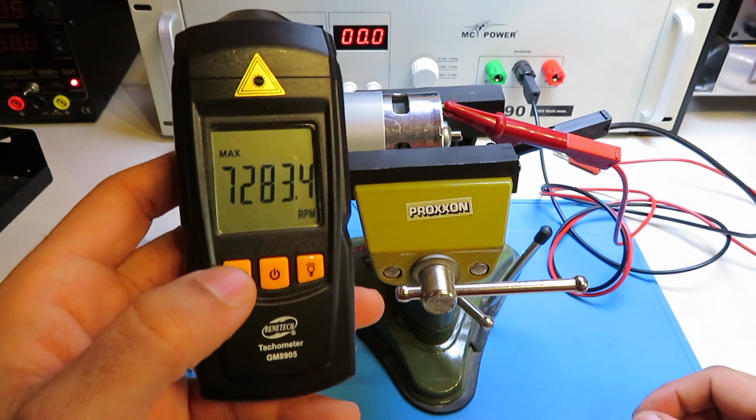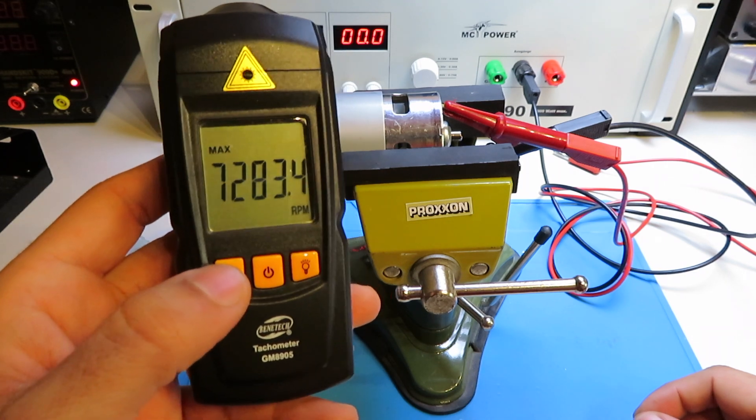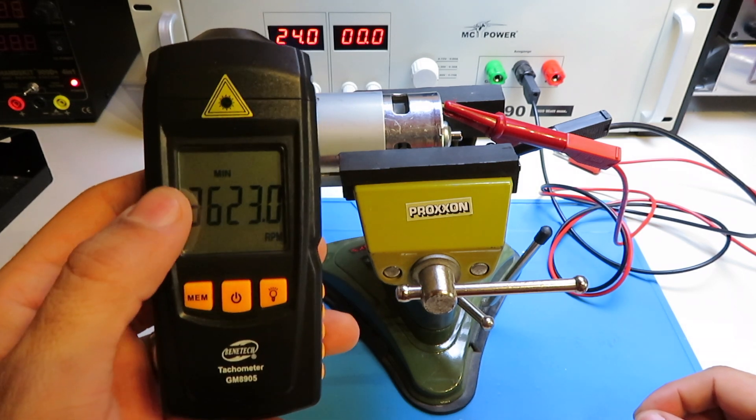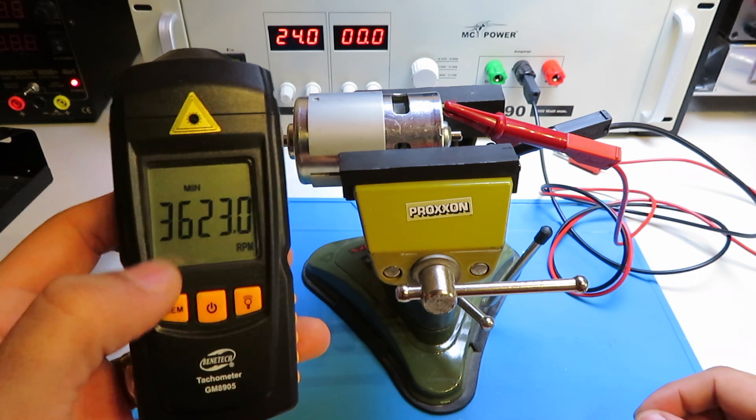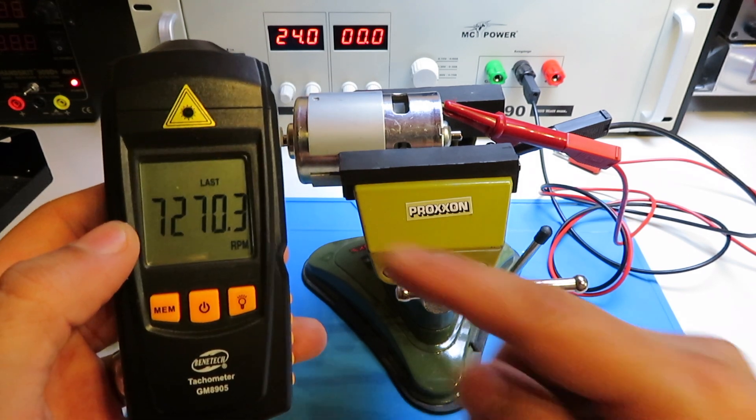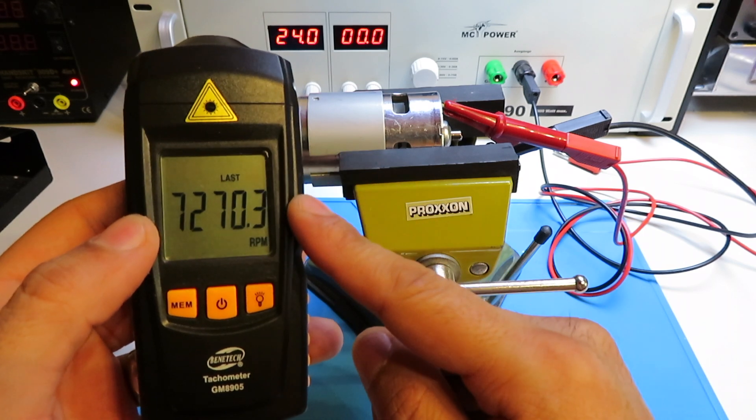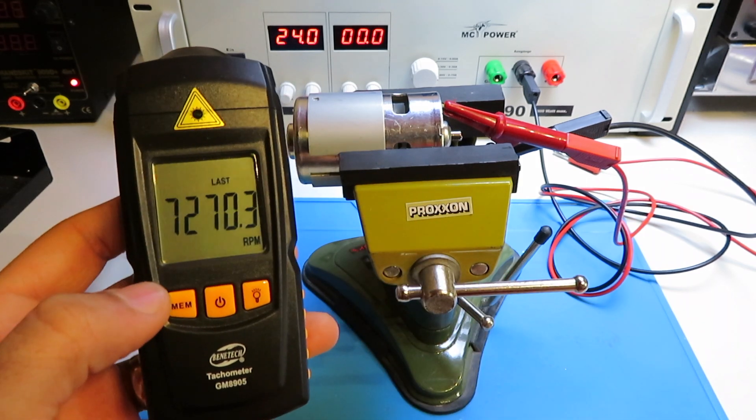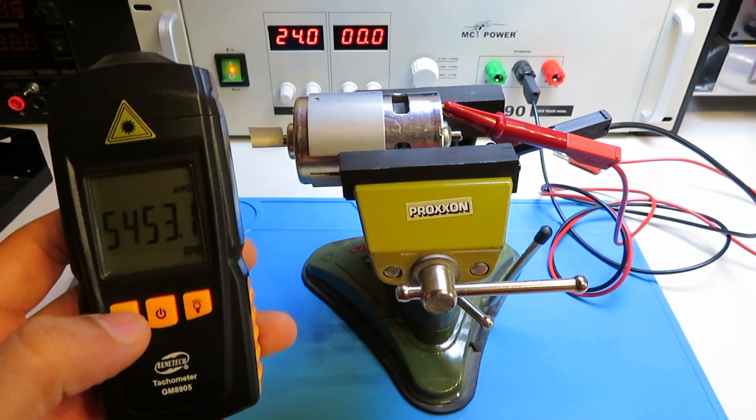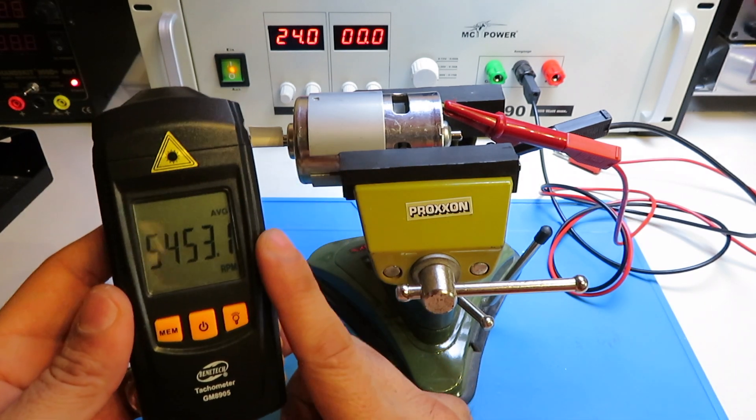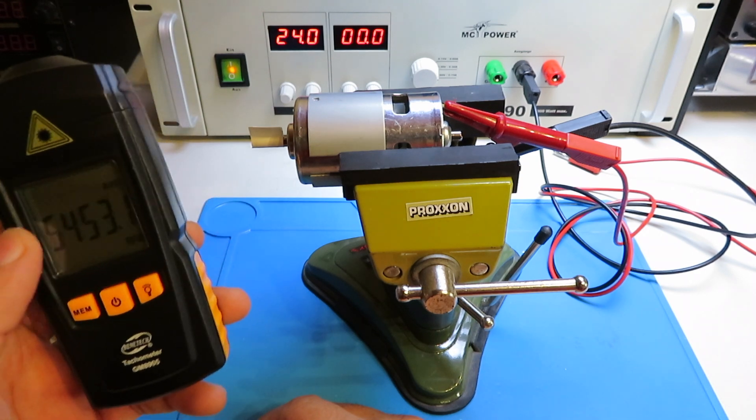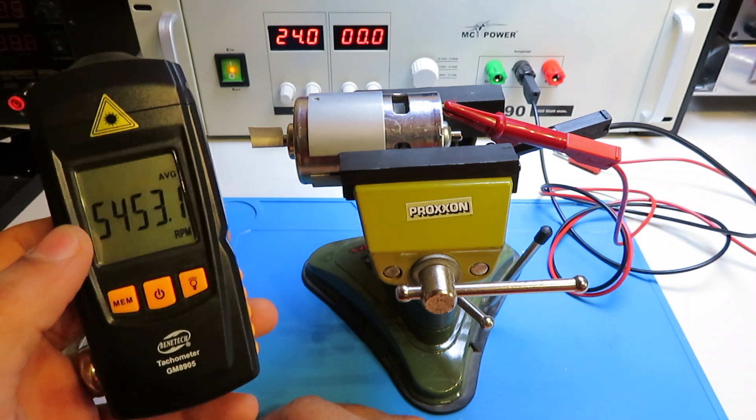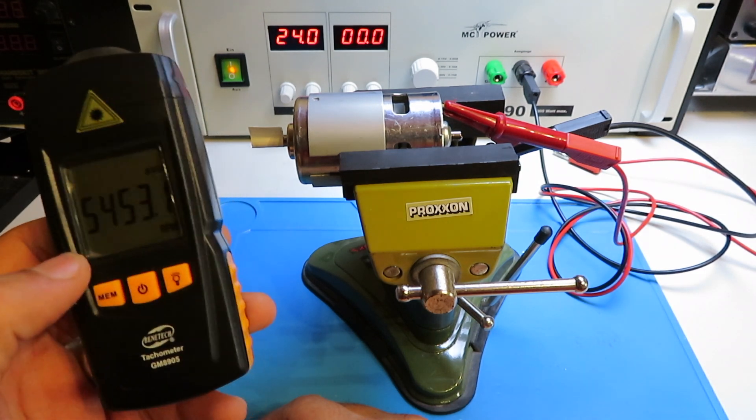So here in the tachometer you see the maximum RPM. The minimum was at 12 volts, so 3,600, and the last measurement was at 24 volts, 7,270 RPM. The average in this case is not important for us because we're measuring different voltages. But in some situations, this option is also really useful.